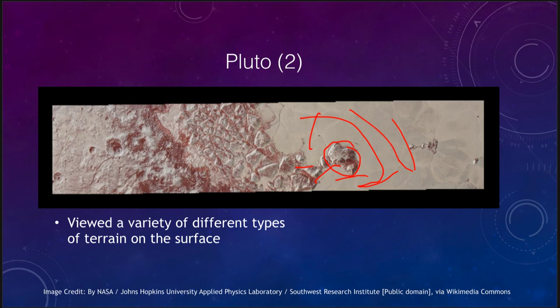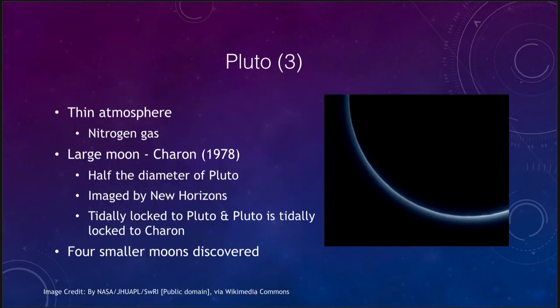We also know that Pluto has an atmosphere — a very thin atmosphere of nitrogen gas, since not much else would be gaseous at this distance. We can see that thin atmosphere illuminated by the Sun when looking at New Horizons' images taken from behind Pluto.